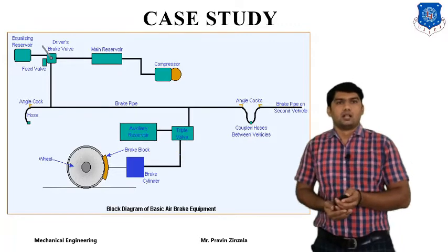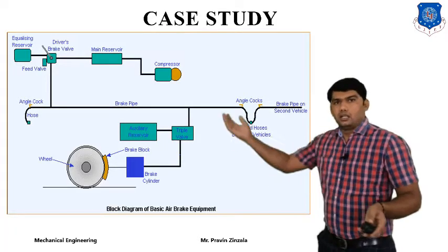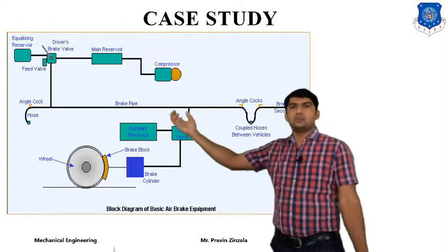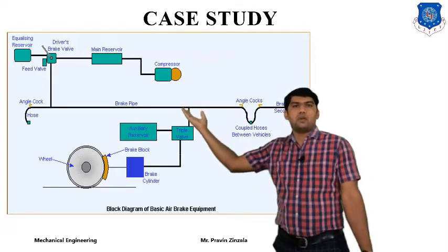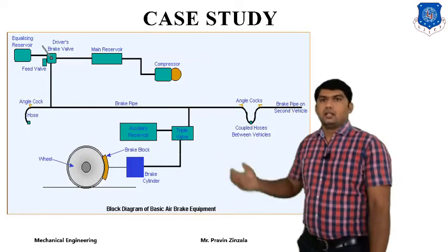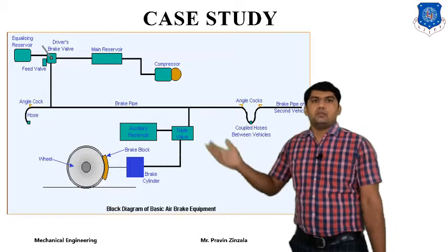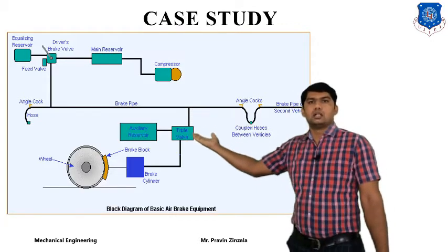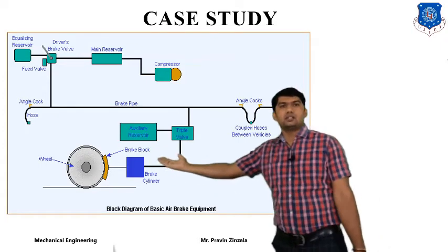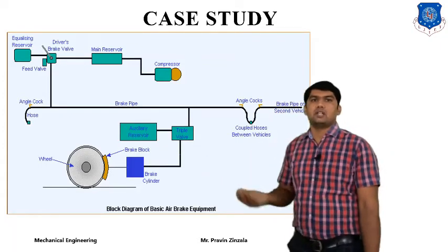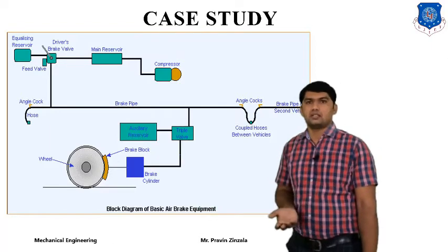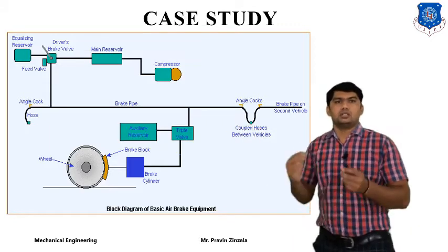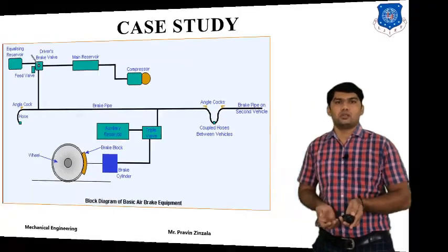The next case study is the pneumatic brake system, generally used in trains. First, the compressor supplies compressed air to the reservoir, where it is stored. Then it goes to the driver's brake valve. When the driver applies the brake valve, the pressurized fluid is passed through different pipelines to different valves, then from the valve to the cylinder, and finally to a shoe brake or band brake type system, and the brake is applied. This also shows the connection between two wagons in a train, making it an example of a pneumatic system case study.